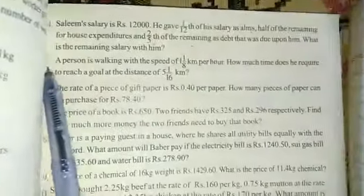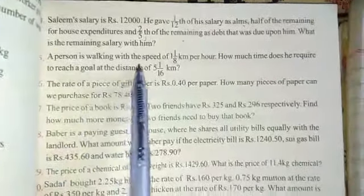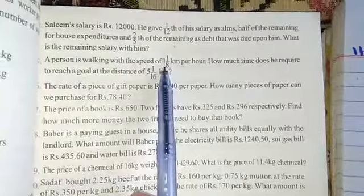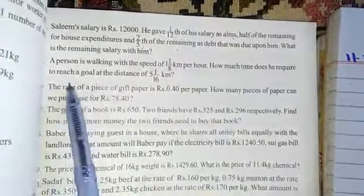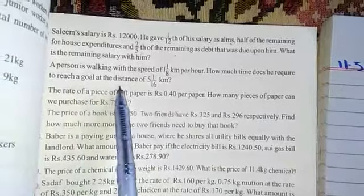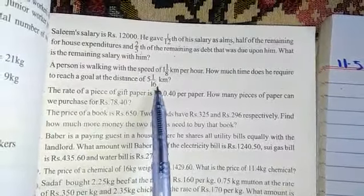Now we have to write question number 5. The statement of the question is: a person is walking with speed of 1 whole 1 over 8 km per hour. How much time does he require to reach the goal at the distance of 5, 4, 1 over 16 km?